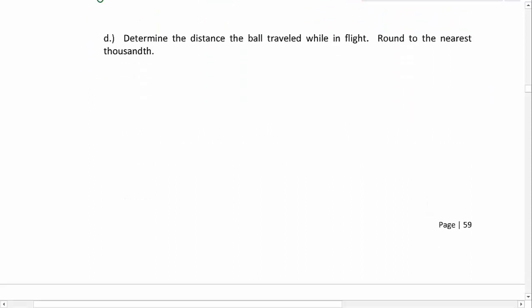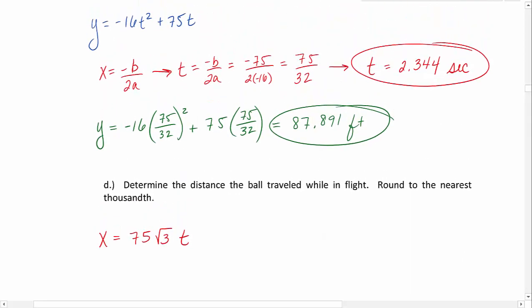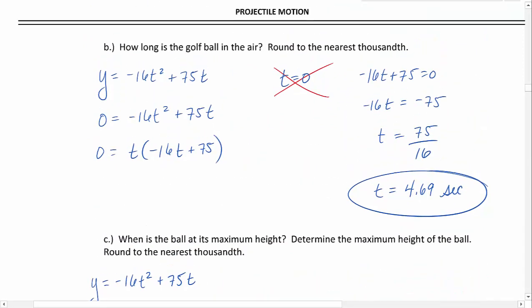Part D asks us to determine the distance the ball traveled. Now we're talking about how far forward did it go. When they talk in golf that somebody hit the ball 200 yards, they're not talking about the up and down. They're talking about how far horizontally did it travel. So since we're talking about horizontal travel, we're going to be using our x equation: x equals 75 square root of 3 times t. So the distance while it was in flight—well, we need to know how long it was in flight.